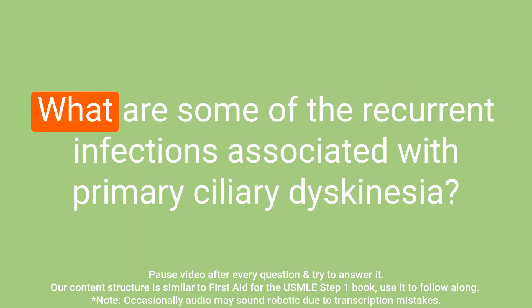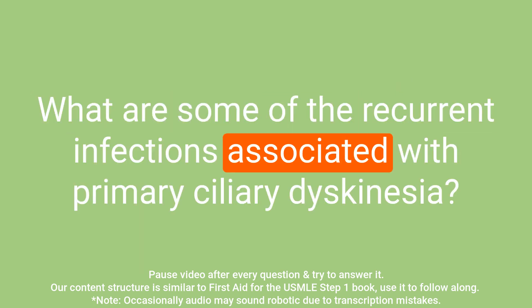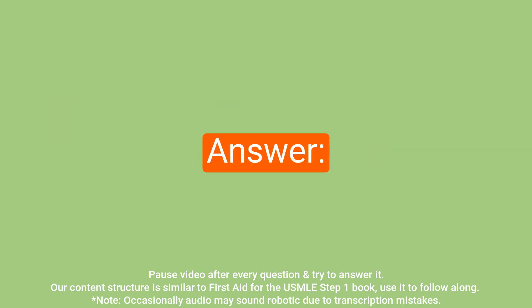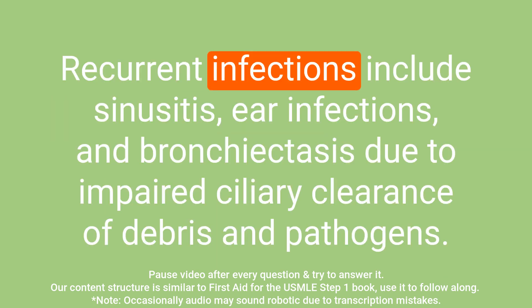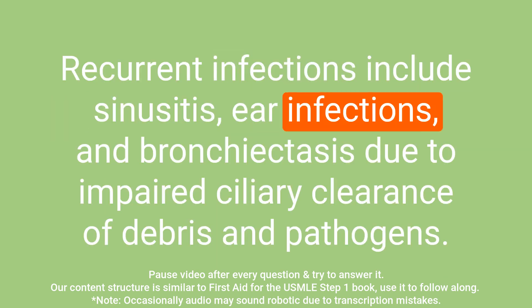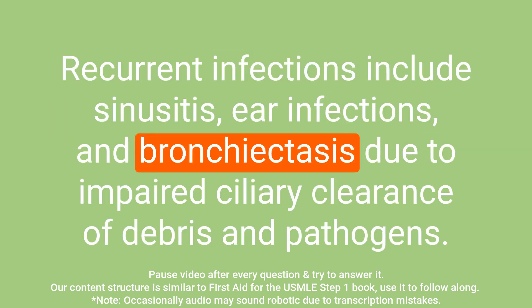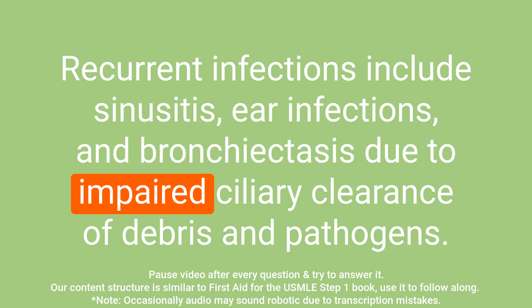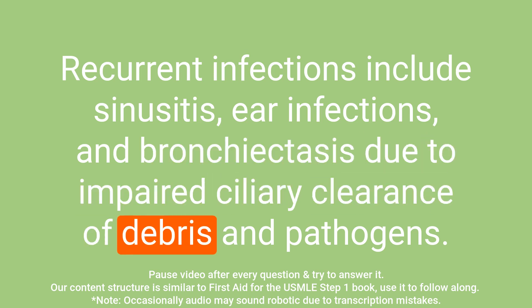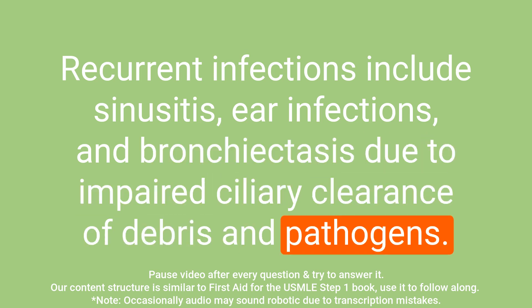Question: What are some of the recurrent infections associated with primary ciliary dyskinesia? Answer: Recurrent infections include sinusitis, ear infections, and bronchitis due to impaired ciliary clearance of debris and pathogens.